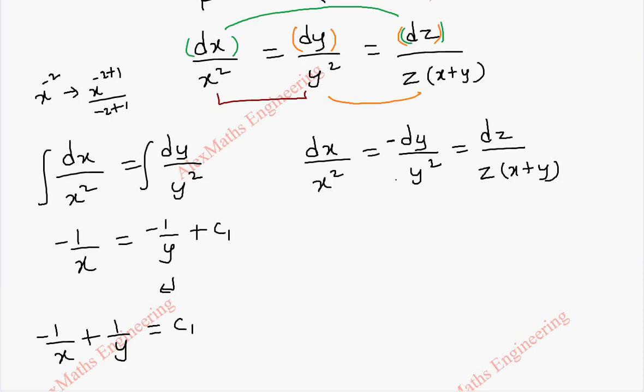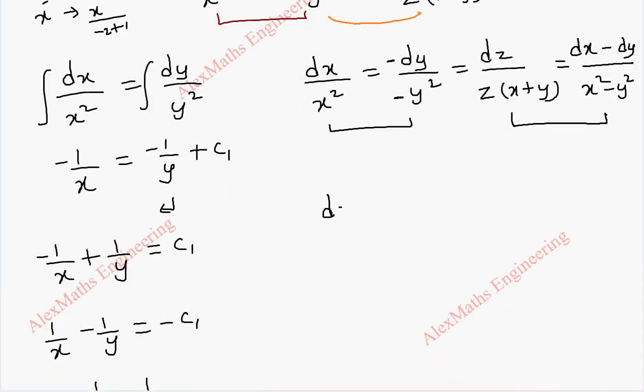Then dz by z into x plus y. I multiply minus with both numerator and denominator here and I am going to group this using the property of the ratio where I can add the numerators. But there is a minus sign. So, dx minus dy, here it is x square minus y square. So, we can take these two terms, that is dz by z into x plus y and x plus y into x minus y. So, we can cancel these two.